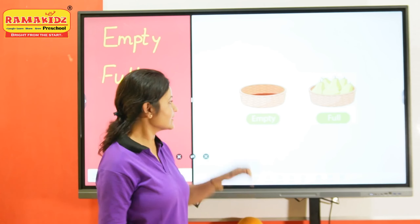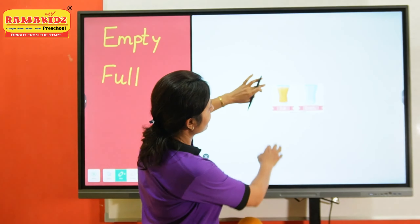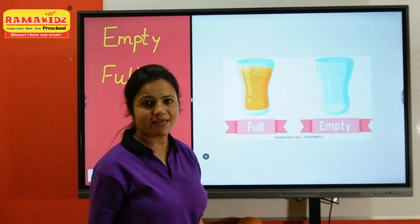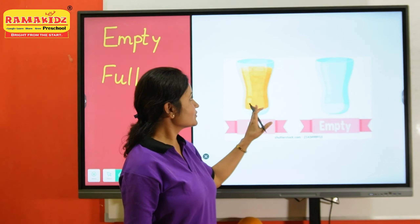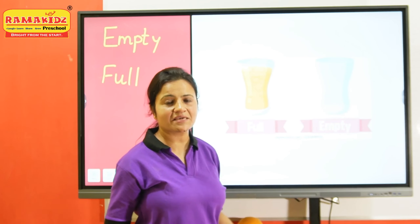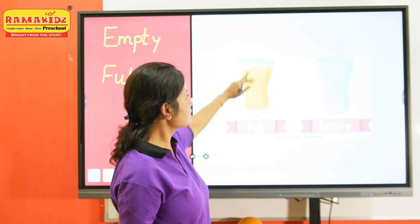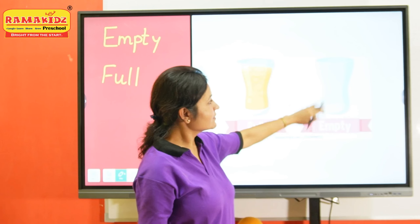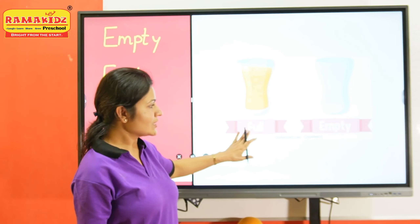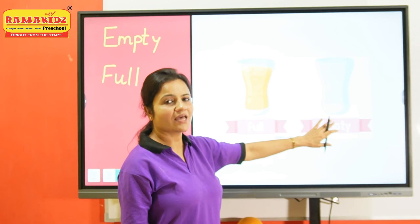Now take one more example. Here as you can see there are two glasses. But one glass is full of juice, and in one glass there is nothing inside. This glass is full of juice because it is filled with juice. And in this glass there is nothing, so this glass is said to be empty. This glass is full, this glass is empty.